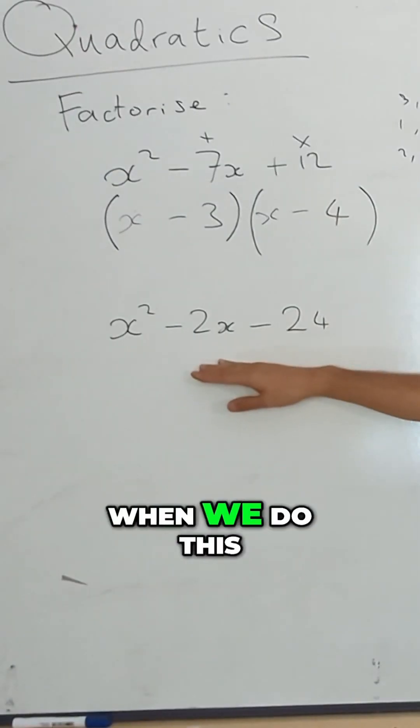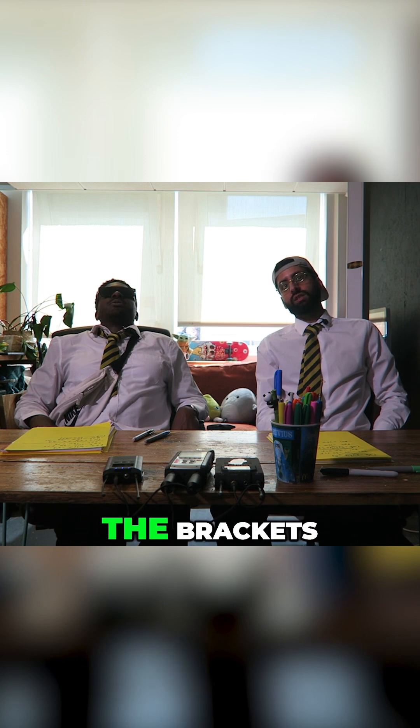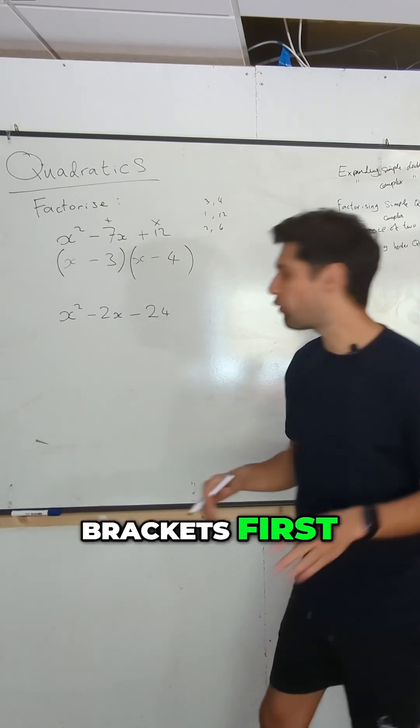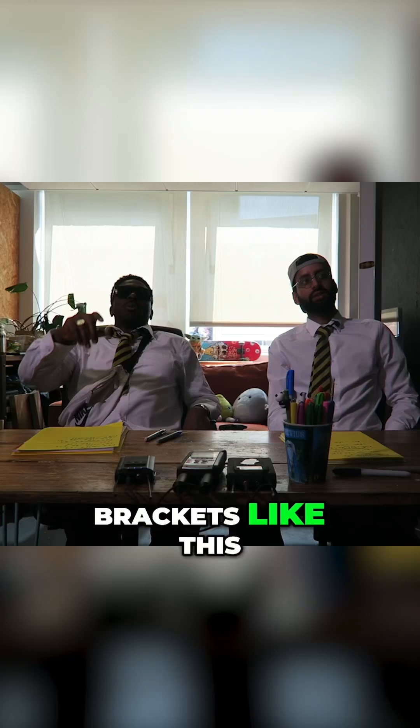So what's the first thing we're going to think about when we do this? What numbers multiply together to get 24? Or the brackets? Brackets first, just because it's nice and easy. As soon as you see the quadratic, just do some nice brackets like this.